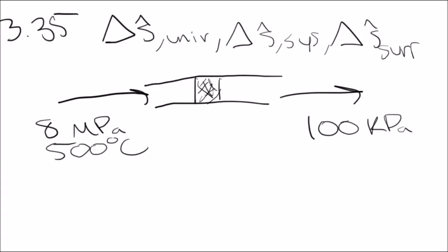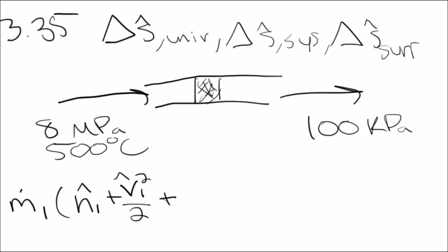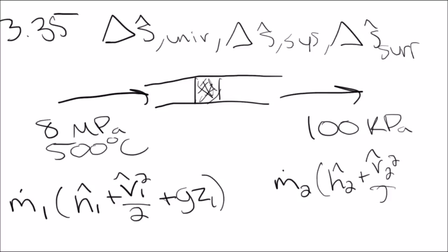The first thing we want to do is perform an open system energy balance on the throttling device. From the open system energy balance equation, the inlet stream has energy m_dot_1 times the quantity h_hat_1, which is the enthalpy term, plus v1_hat squared over 2, the kinetic energy term, plus g*z1, the potential energy term. The outlet stream mirrors this: m_dot_2 times h_hat_2 plus v2_hat squared over 2 plus g*z2. We also have Q coming in and shaft work coming in.